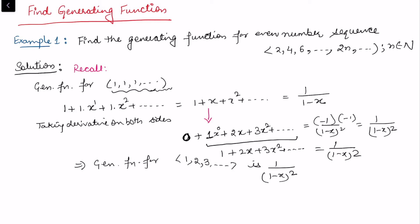From here we want to reach the sequence 2, 4, 6, ..., up to 2n. Our question is to find the generating function for the even numbers, so we multiply both sides. Consider the same sequence 1 + 2x + 3x² + ...